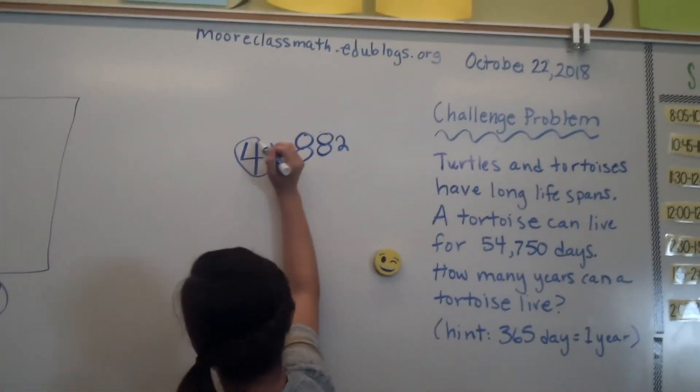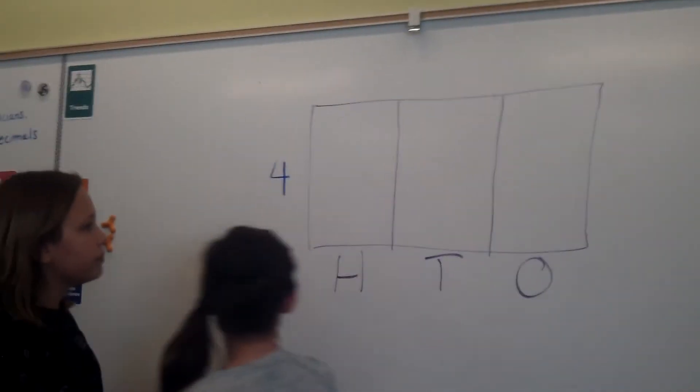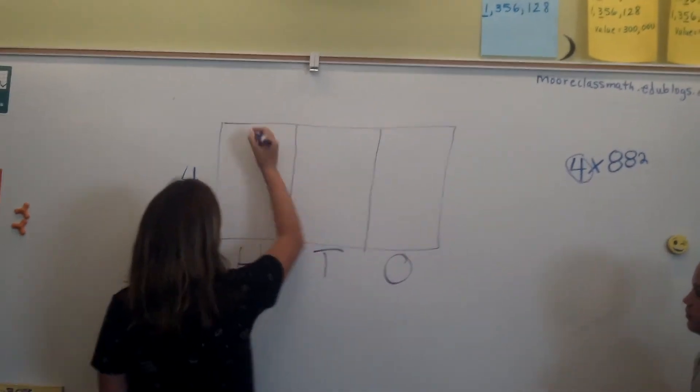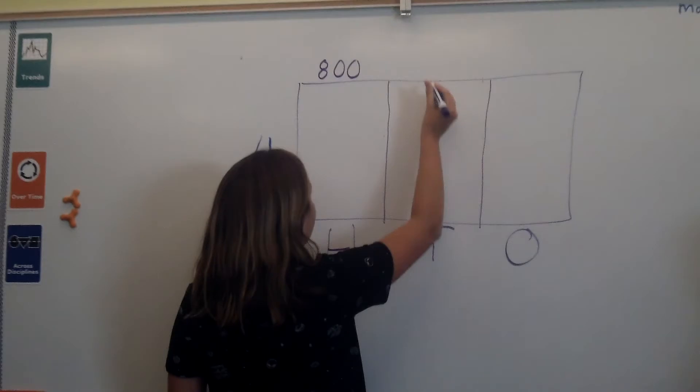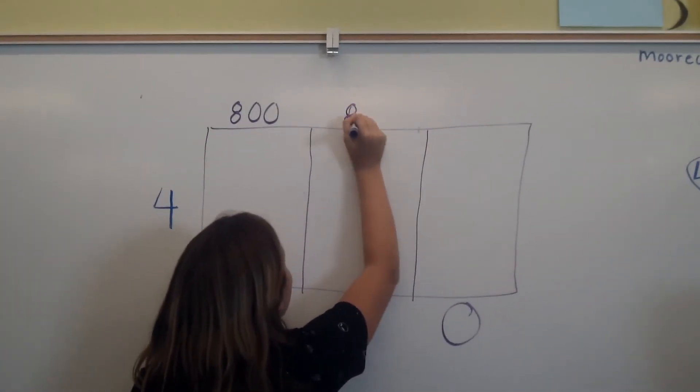Then you're going to take the outside number, or the smallest number, and you're going to put it on the outside of the model. Then you're going to take your larger digit, and you're going to put your hundreds right there, tens right there,